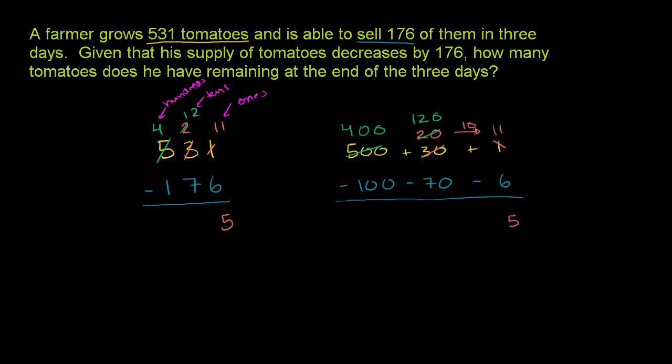So now that our number on top in the tens place is bigger than our number on bottom, we can subtract. So we get 120 minus 70. That is 50. Or 12 minus 7 is 5. But that 5 is in the tens place, so it's really representing 50.